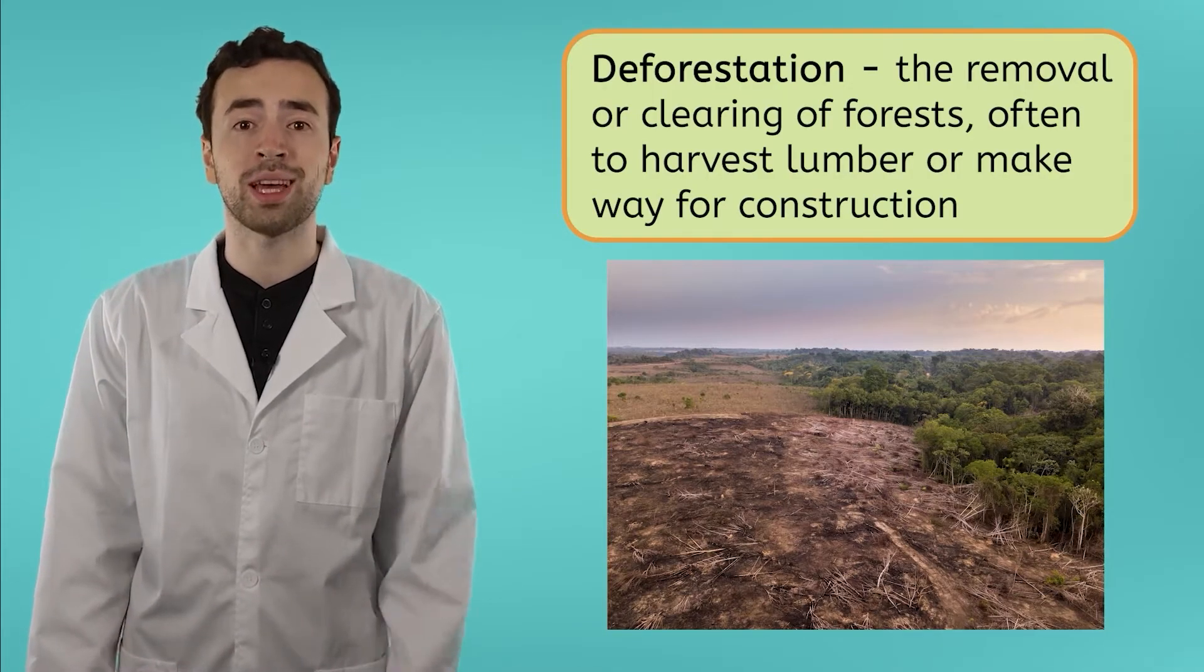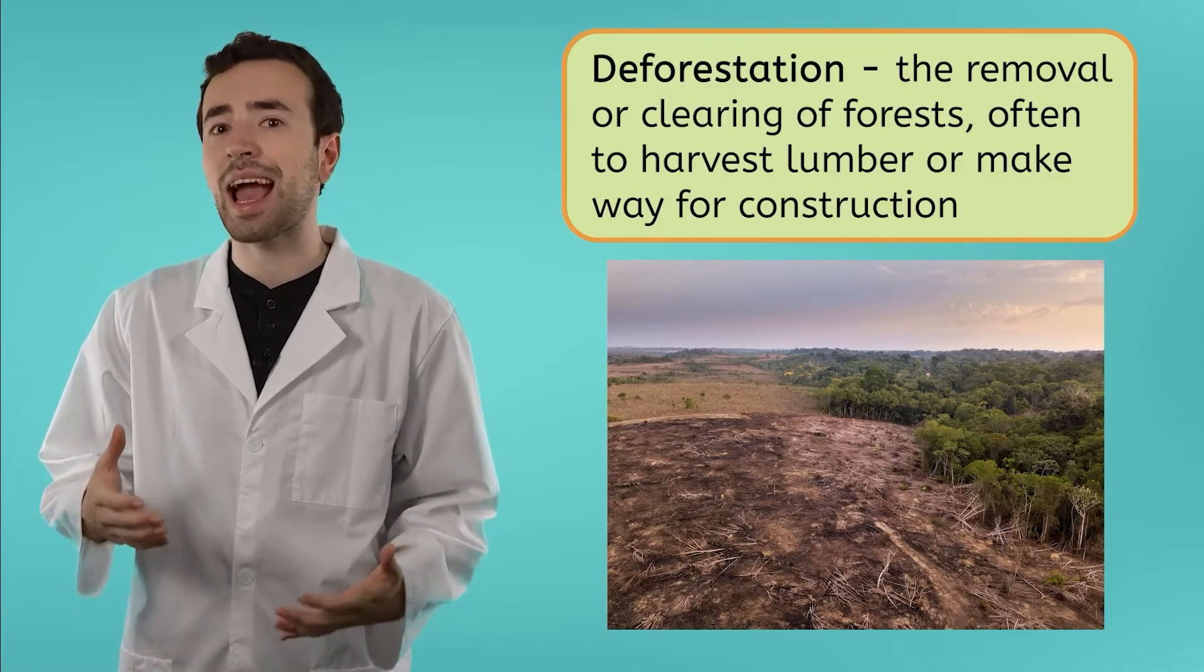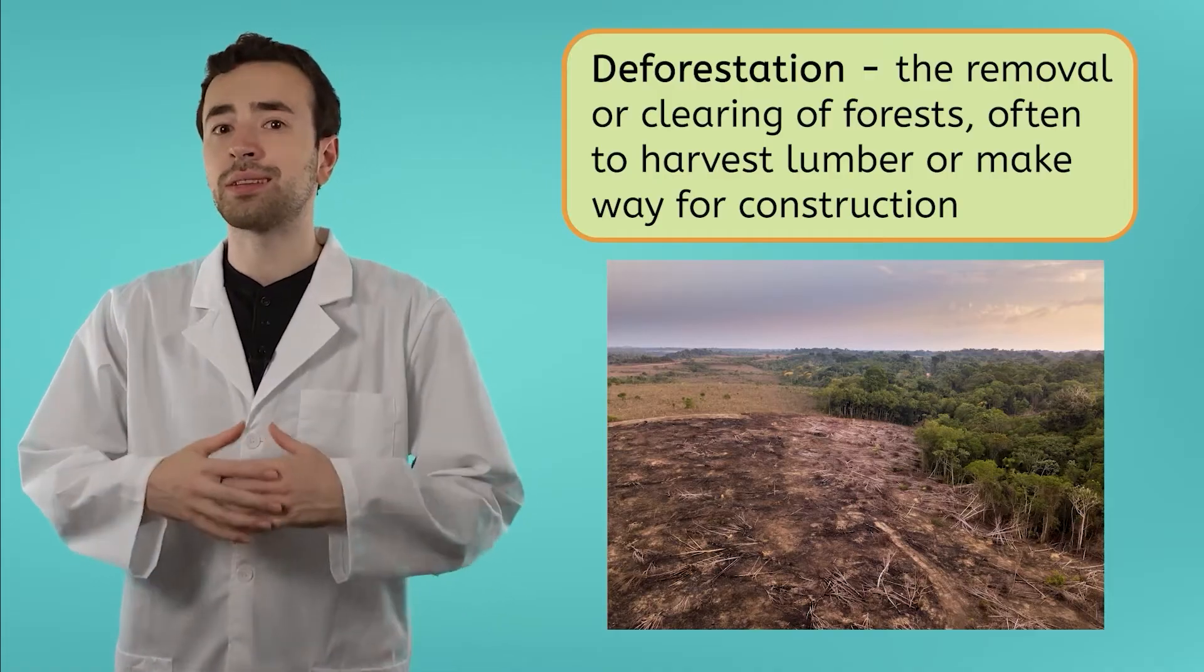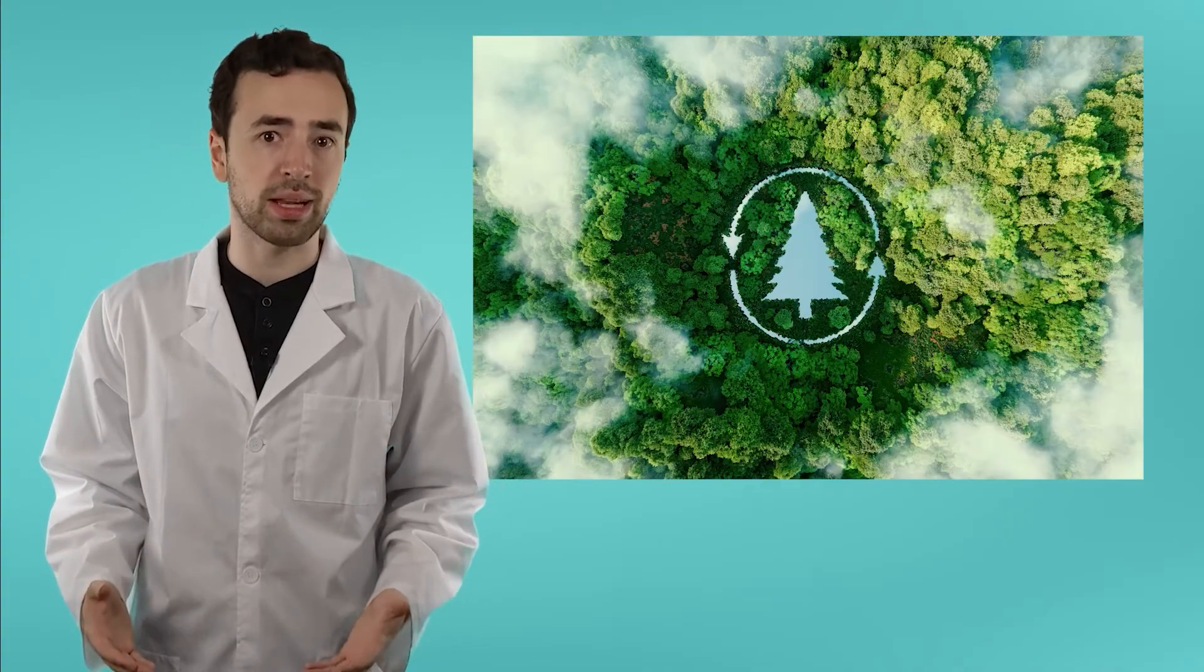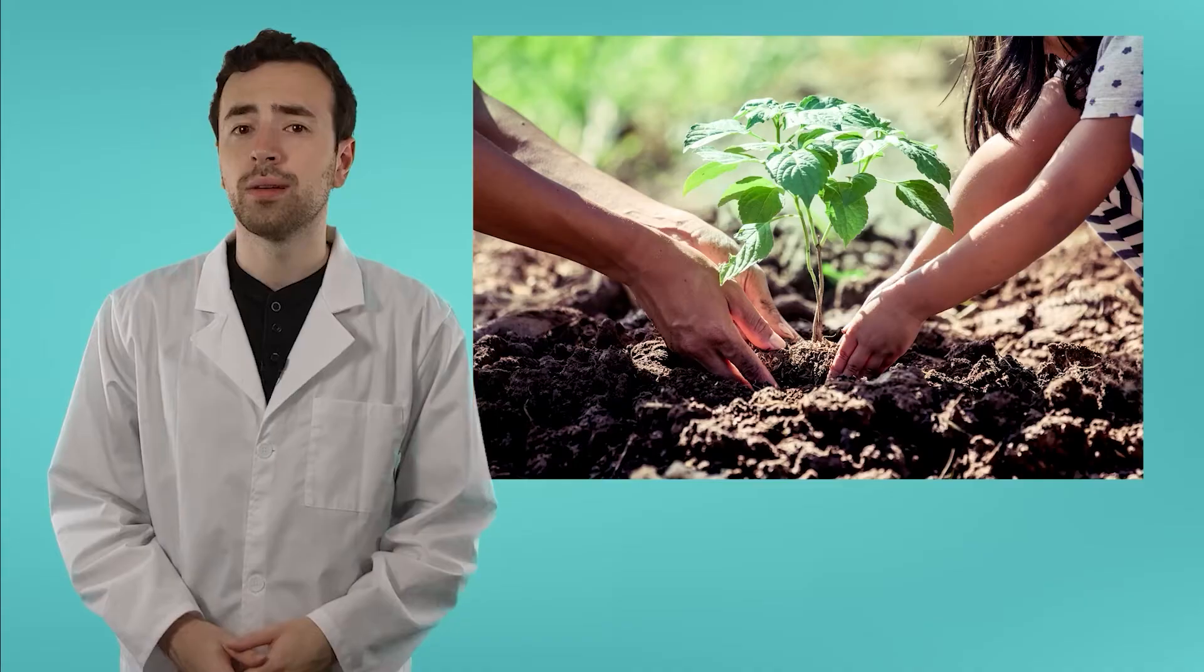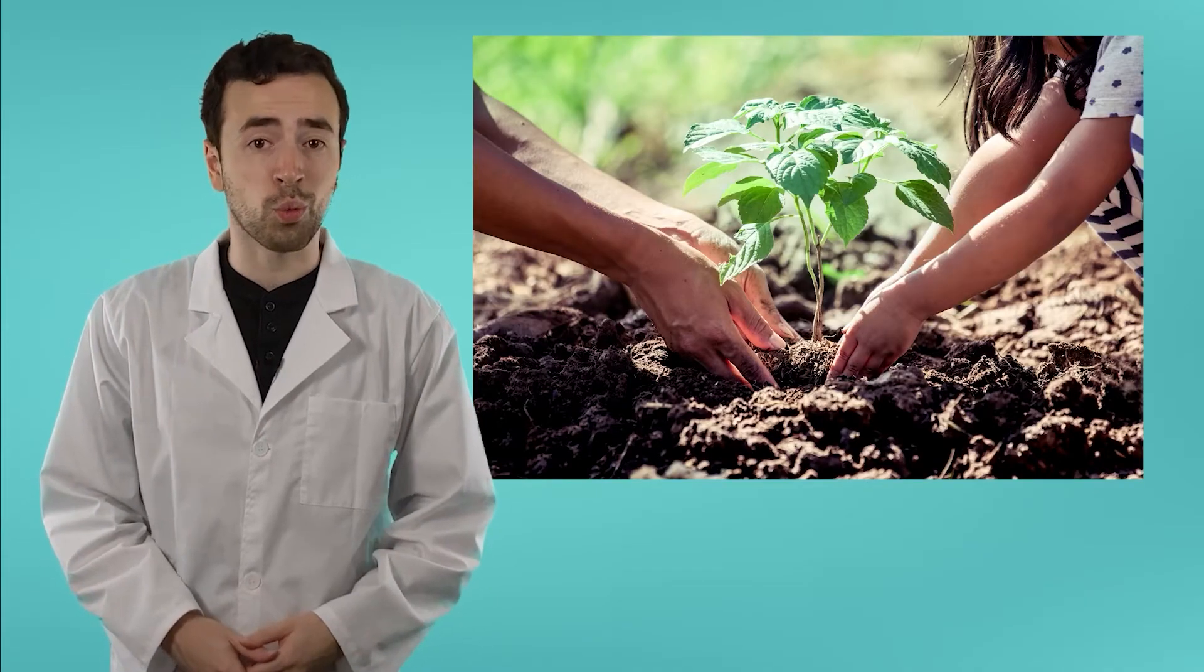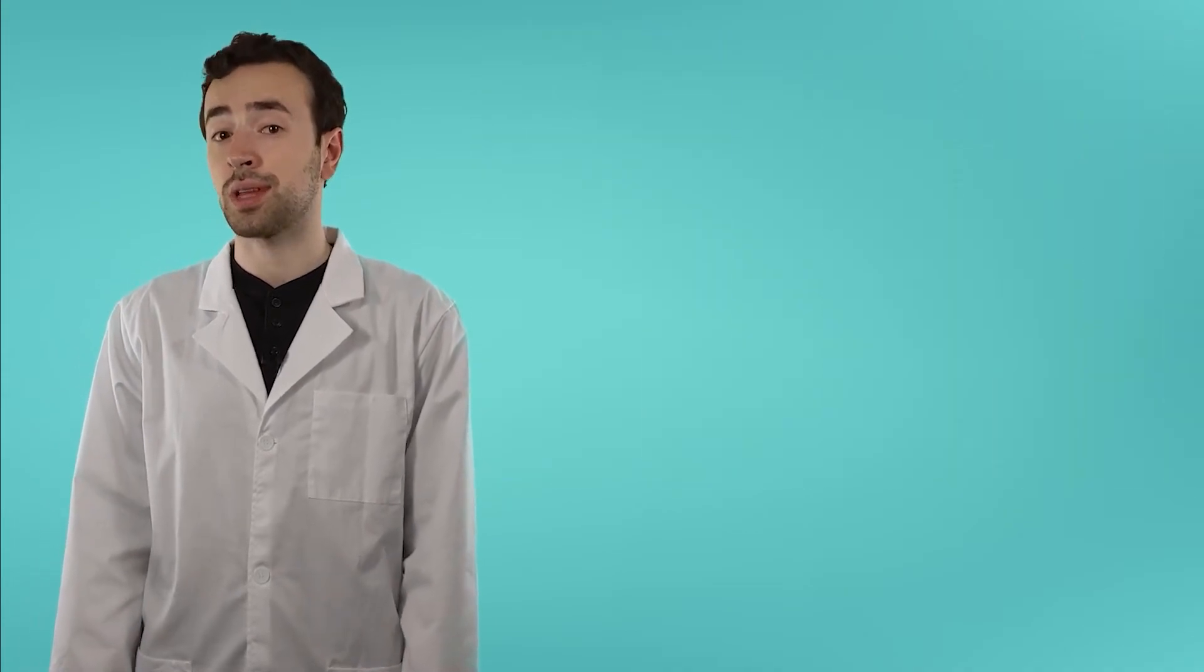Deforestation can destroy the habitats of millions of species and disrupt the balance of gases in our atmosphere by releasing less oxygen and absorbing less carbon dioxide. However, deforestation can be prevented by using sustainable logging practices. This involves careful planting to ensure that trees are not being harvested at a faster rate than they can regrow. Reforestation, or planting new trees, is another effective method that can help. Individuals, communities, and organizations around the world can plant trees to help replace those that have been lost due to deforestation.